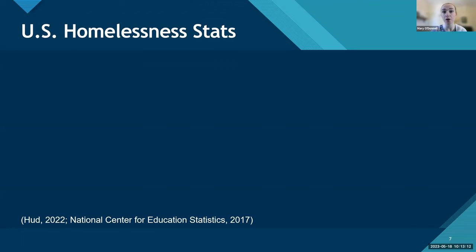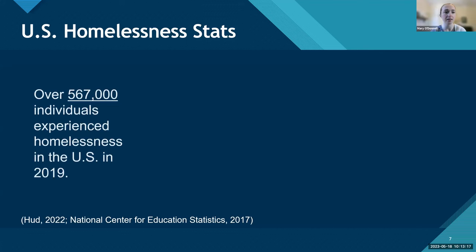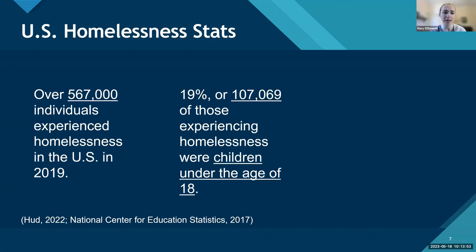To provide a sense of the scope of homelessness in the United States: in 2019, almost 600,000 individuals were experiencing homelessness on a given night. We count this through the point-in-time count — a survey conducted on one given night tallying folks living in shelters. That number was shockingly high. Another interesting statistic is that about 19% of those experiencing homelessness were children under the age of 18. As a pediatric OT working in an urban setting, this was a staggering statistic.